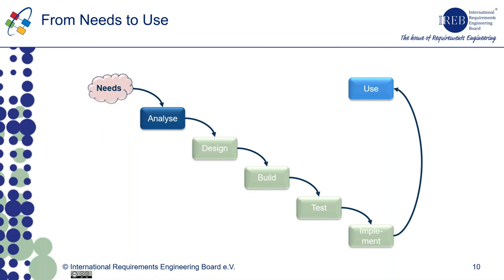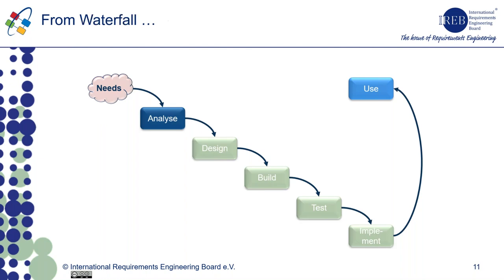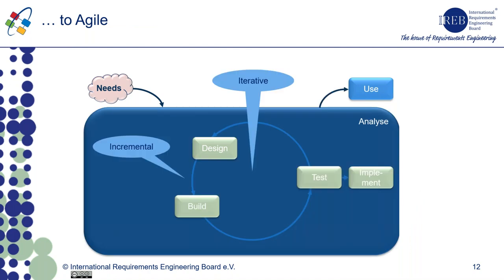Requirements engineering is about needs and how to transform them into use. In the traditional system development approach, needs were first analyzed — this is where we talk about requirements engineering, information analysis, or business analysis. The outputs from the analysis phase feed into the design phase, then we build, test, and implement systems. In the waterfall situation, this was the normal way of working. But nowadays, many projects develop in an agile way, and then the way of working is different.